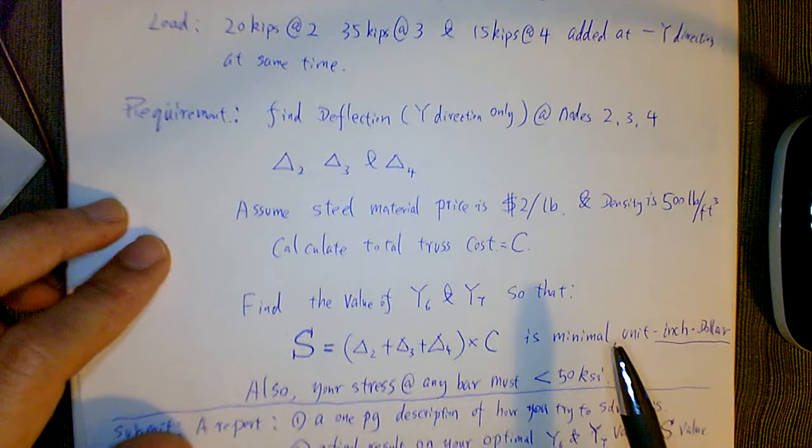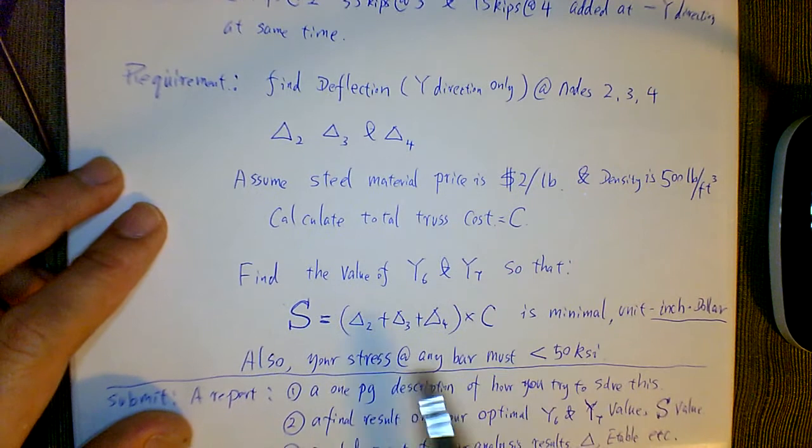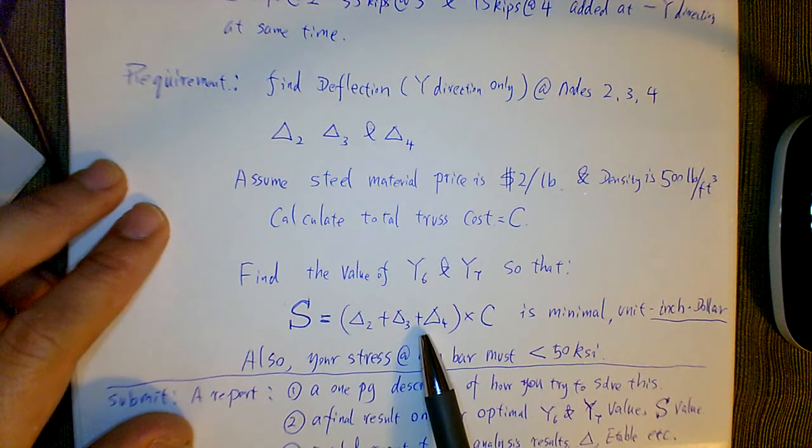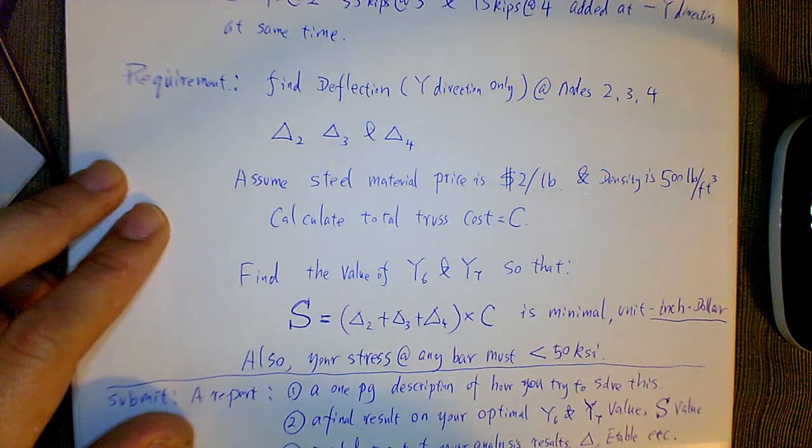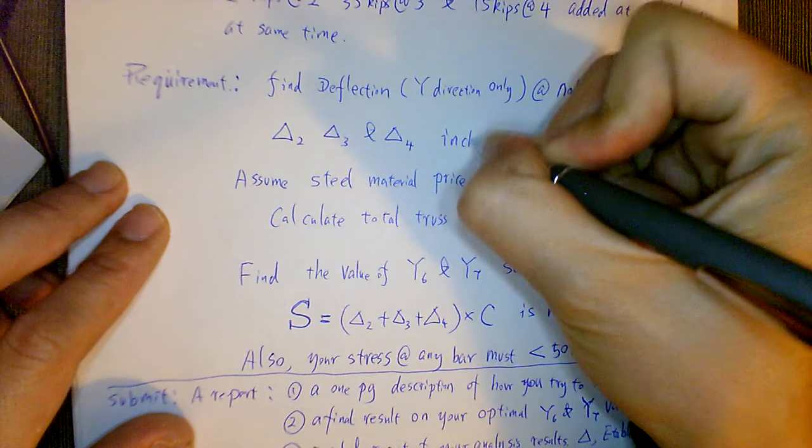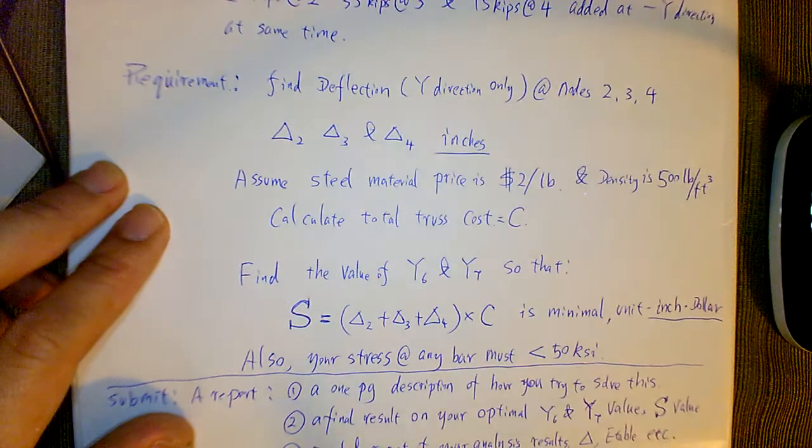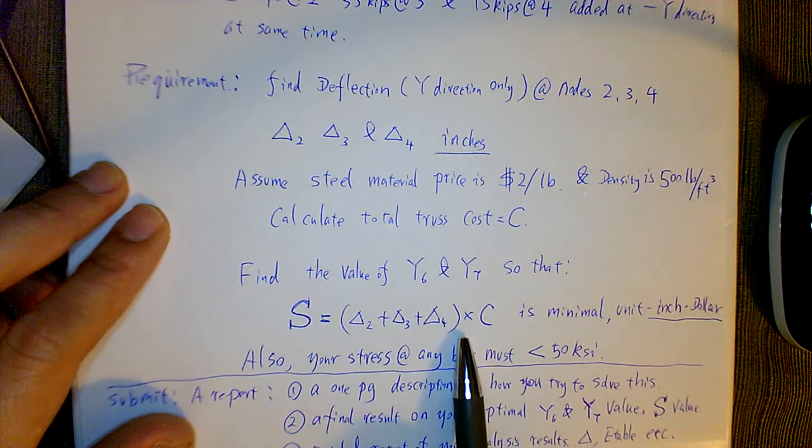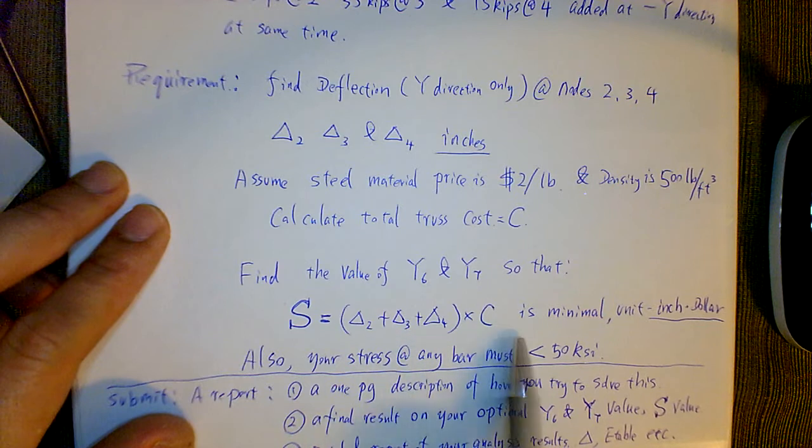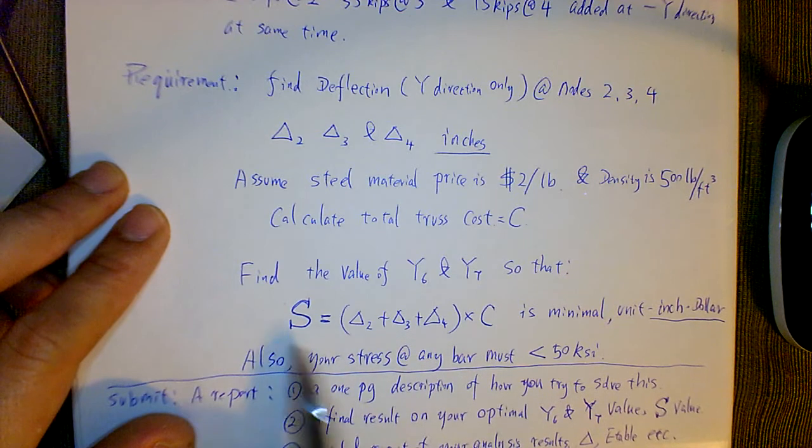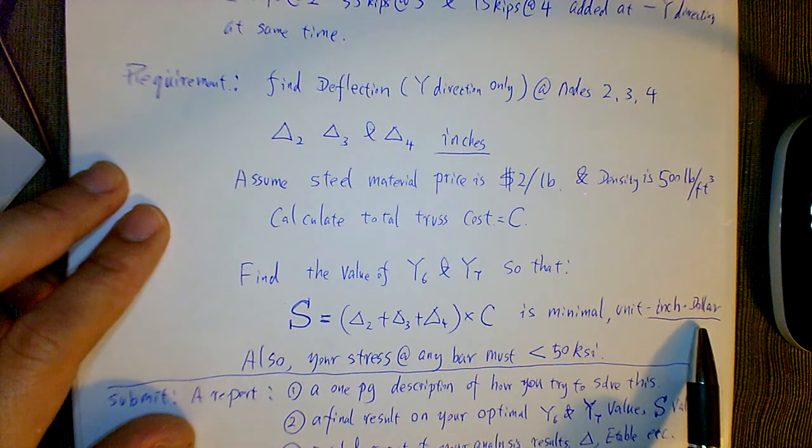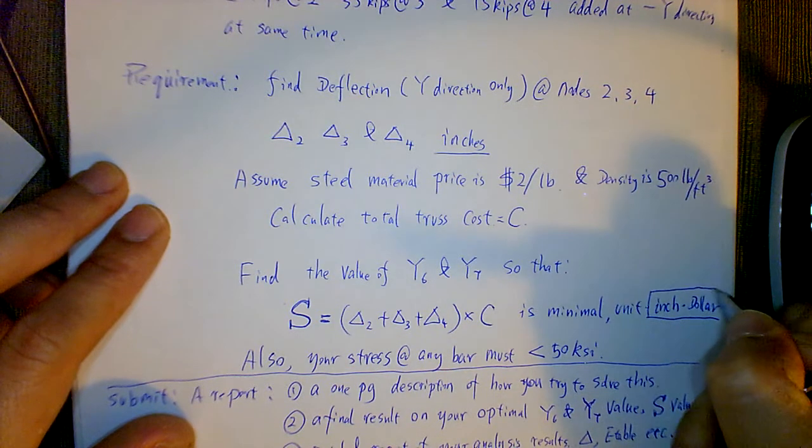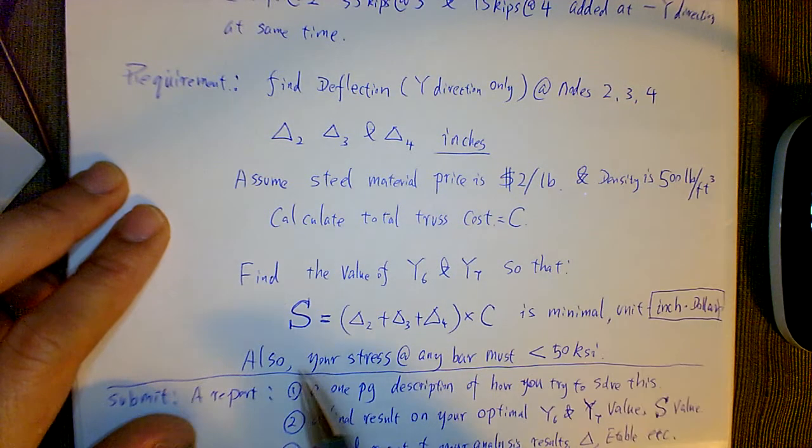Then what you want to optimize is that you add those three deltas—2, 3, 4—together, and get them in inches. Then you've got the total cost. You times them together. I want this entire result—we call it S—and it should be in the unit of inch and dollar. I need to specify this because some people might send me something that's in feet and hundred dollars. That doesn't work.